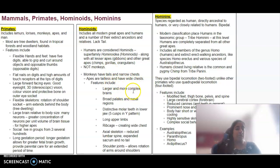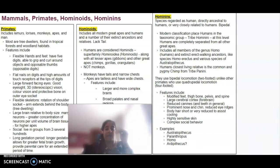In terms of features, they have larger and more complex brains, broad palates and nasal regions, long upper limbs, an axial skeleton which means they have reduced lumbar spine and an expanded sacrum and no tail, and shoulder joints which allow for rotation. Hominins are basically species regarded as human. They can be directly ancestral to humans or very closely related to humans.